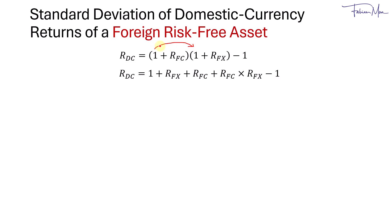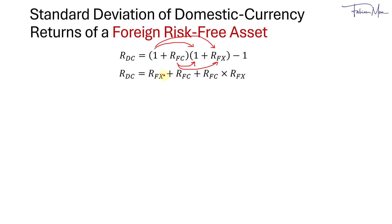So you have 1 times 1, then 1 times R_FX, then R_FC times 1, which gives a third term, and finally R_FC times R_FX, giving the product term — and then we subtract 1. Cancelling the 1 minus 1, we get the simplified expression.